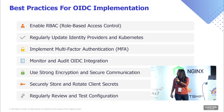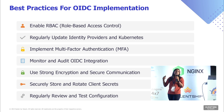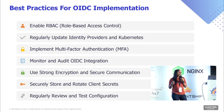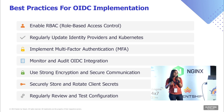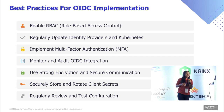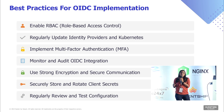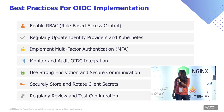Best practices for OIDC implementation: enable RBAC — even though a user is authenticated, always enable RBAC because without it they won't be able to perform any operations. Regularly update your identity provider. Implement MFA. Securely store and rotate client secrets — the client secret is critical for the identity provider to authenticate clients using client ID and secret. Finally, regularly review and test your configurations.